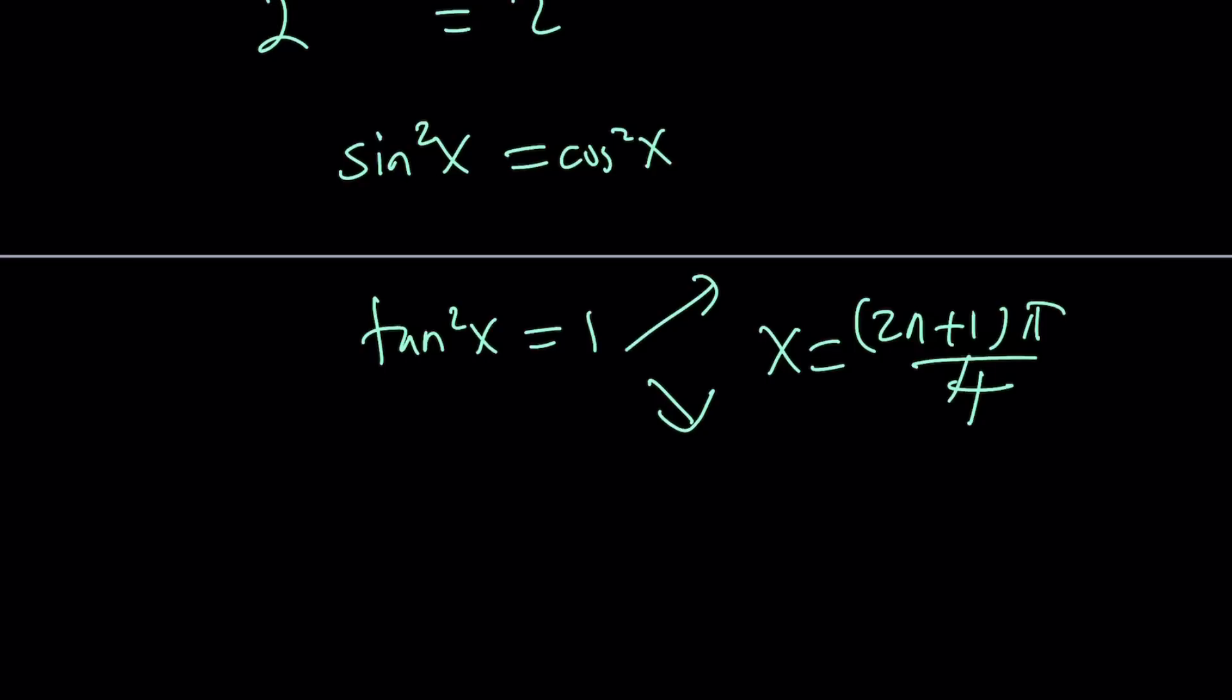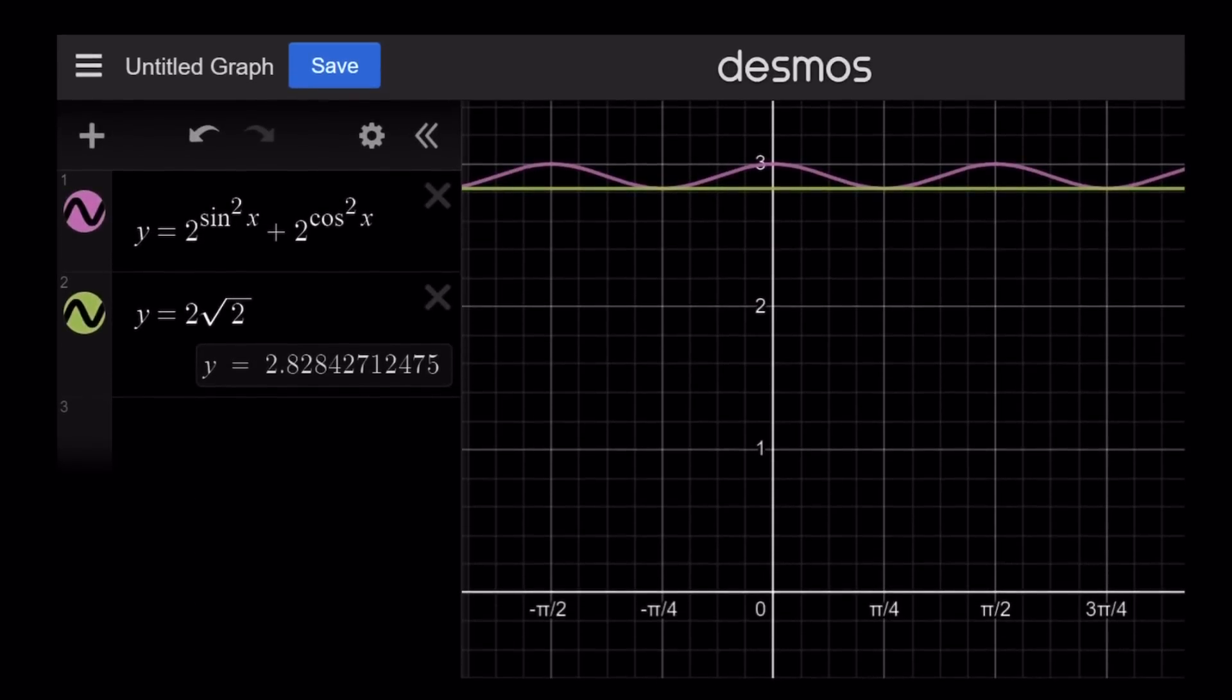All right, let's go ahead and take a look at the graph and we'll just finish up with that. So here we go, the graph of 2 to the power sine squared plus 2 to the power cosine squared. It intersects the y equals 2 root 2 at infinitely many points. But did I tell you that this is the minimum value for this function?